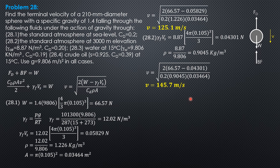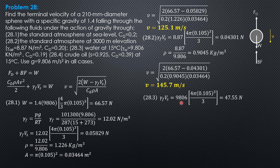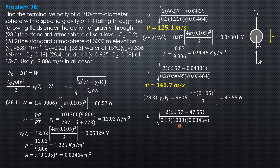For the third case — water at 15 degrees Celsius — gamma of fluid times volume of sphere equals 9,806 times (4/3)π times r³ = 47.55 N. The coefficient of drag is 0.19, and the density of water is 9,806 divided by 9.806 = 1,000 kg/m³. Substituting: V = √(2 × (66.57 − 47.55) / (0.19 × 1,000 × 0.03464)), giving 2.404 meters per second.